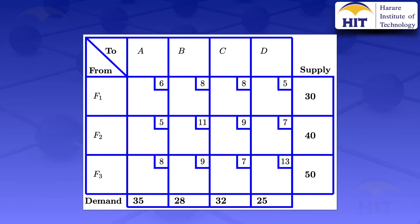Using the least cost method, we start by looking at the least cost for each of the given cells. The unit costs are the ones shown in the small squares. The least cost we see is a five, but we also have a tie — another five. When using the least cost method and we have ties, we look at the least numbered row first. We have row one (F1) and row two (F2), so we allocate in row one (F1) first, then move to F2.